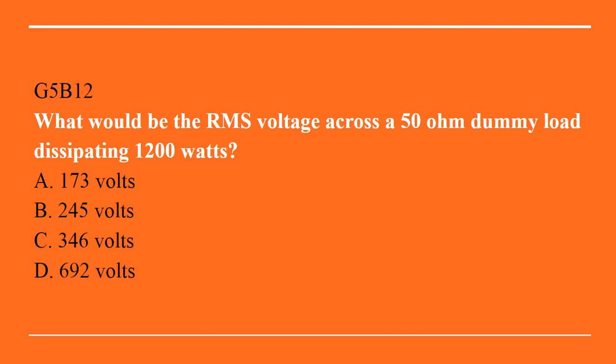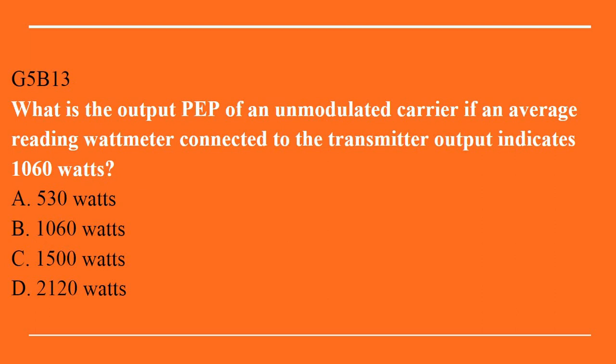G5B12: what would be the RMS voltage across a 50 ohm dummy load dissipating 1,200 watts? A. 173 volts. B. 245 volts. C. 346 volts. Or D. 692 volts. Answer is B: 245 volts. G5B13: what is the output PEP of an unmodulated carrier if an average reading wattmeter connected to the transmitter output indicates 1,060 watts? A. 530 watts. B. 1,060 watts. C. 1,500 watts. Or D. 2,120 watts. The answer is B: 1,060 watts.